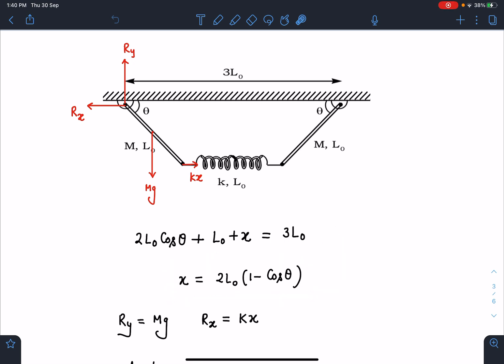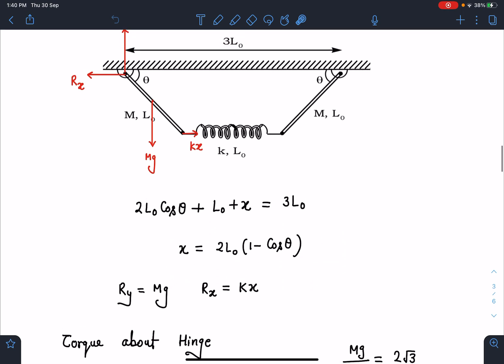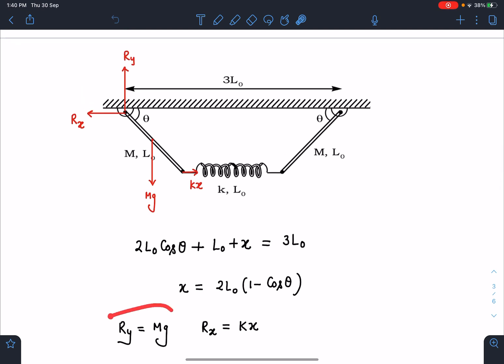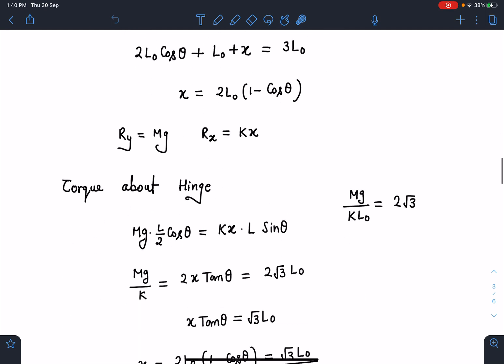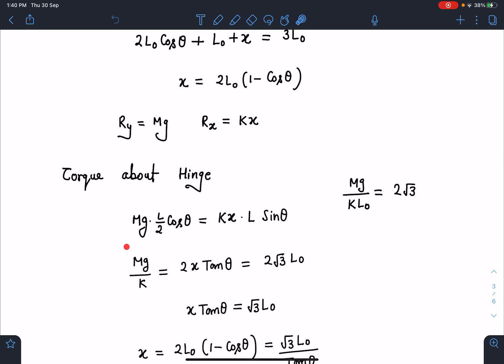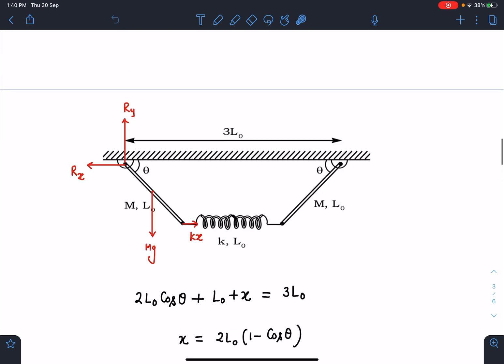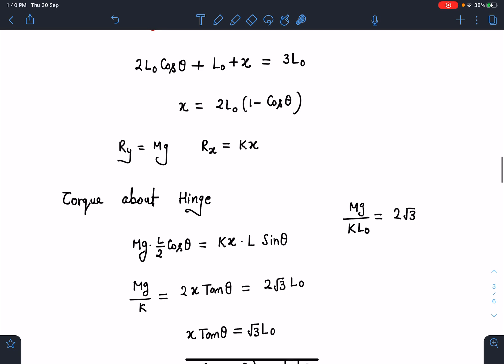So I'll get this value as x = 2L₀(1 - cos θ). Now here Ry I can say directly by force balance Ry is Mg and Rx is kx. After this I can balance the torque about this point. So when I balance the torque about this point, torque of Mg is Mg into L₀/2 cos θ, and this is kx. It will be equal to kx into L sin θ. That is what I have done here.